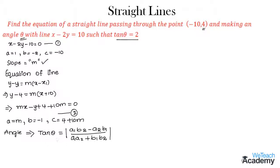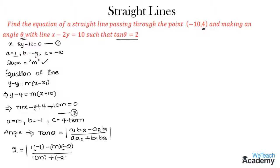Substituting values from equation 1 and equation 2: 2 equals mod of (1 into (minus 1) minus m into (minus 2)) divided by (1 into m plus (minus 2) into (minus 1)), which simplifies to mod of (minus 1 plus 2m) divided by (m plus 2).